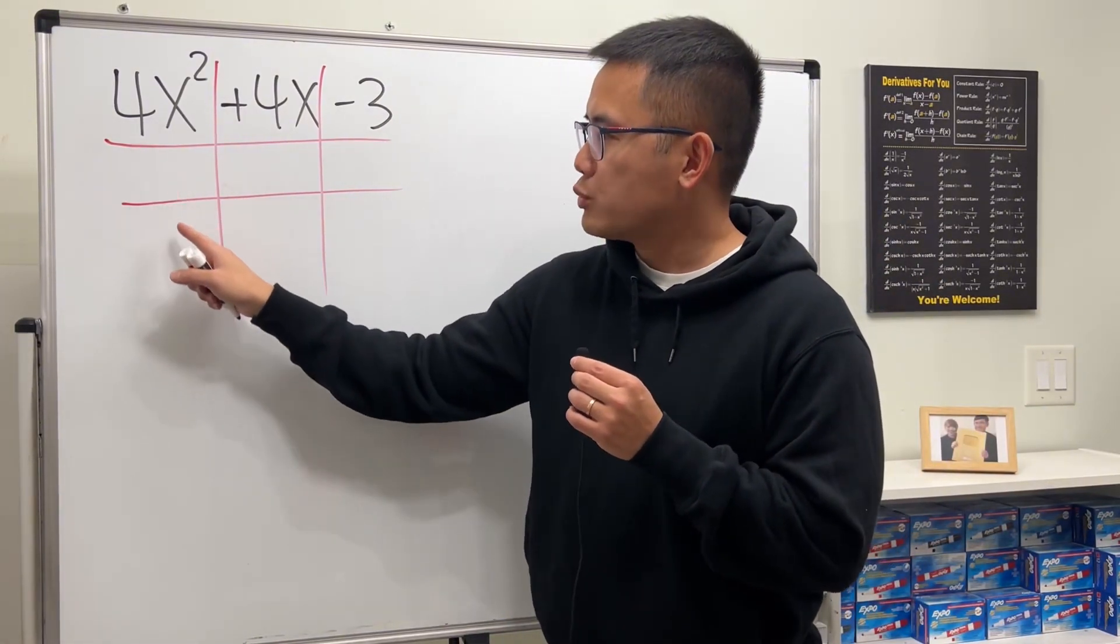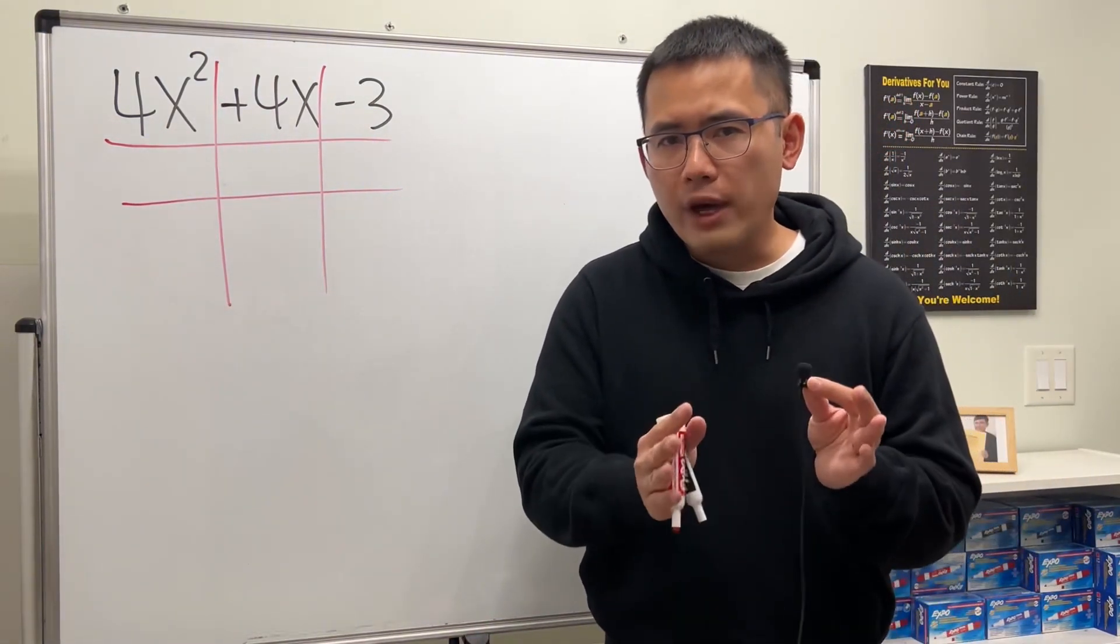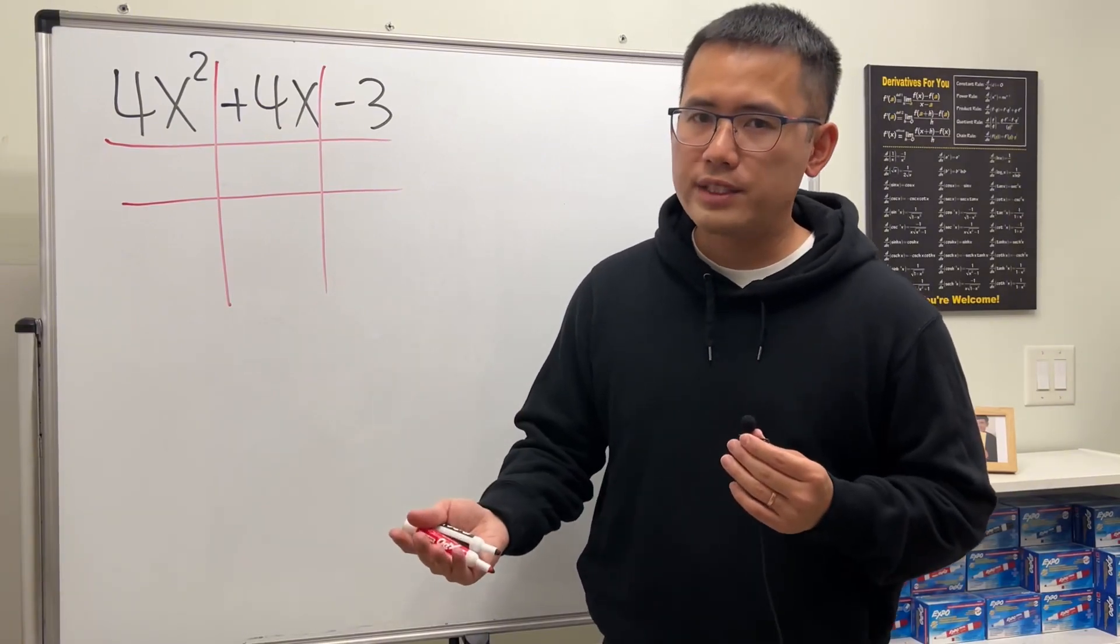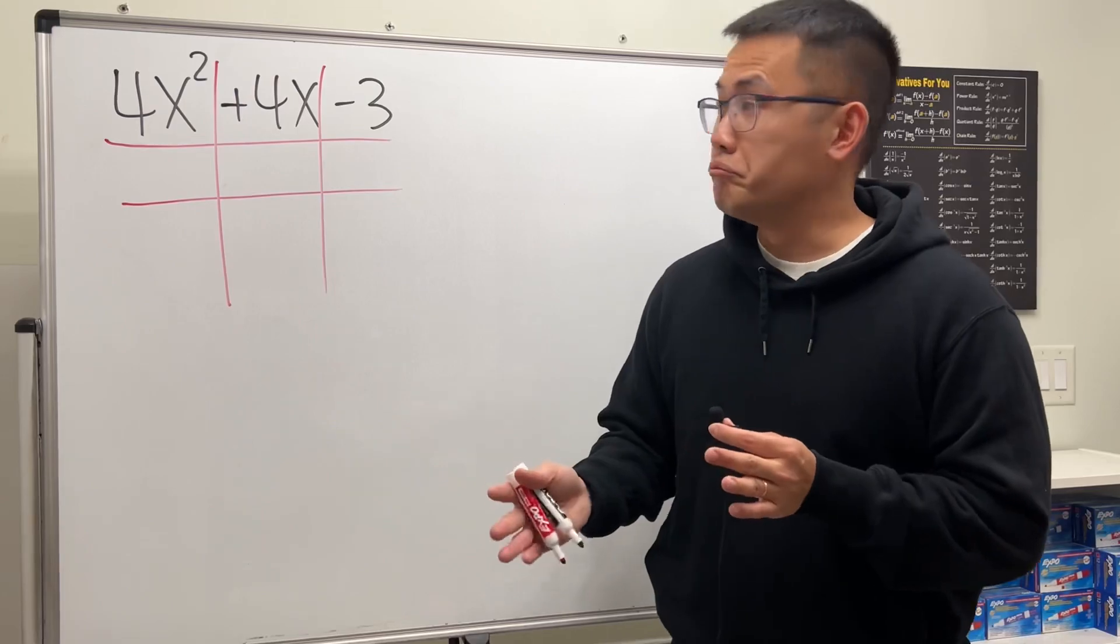To do so, we ask ourselves what times what will give us 4x², and here we have two possibilities. Maybe we can have 4x times x, that's 4x², but we can also have 2x times 2x. So which one do we put?